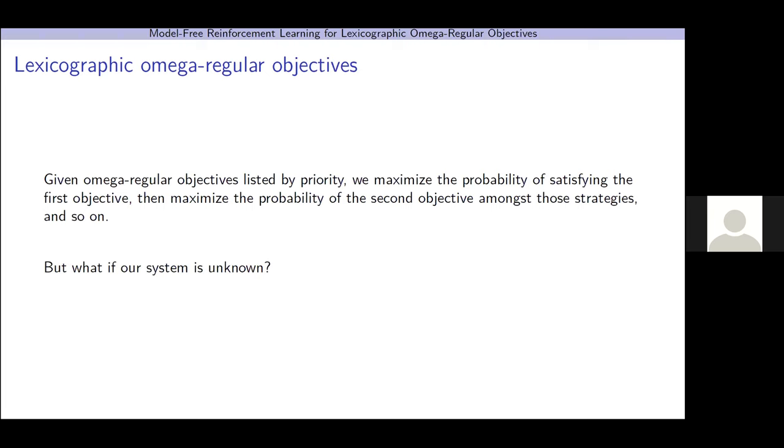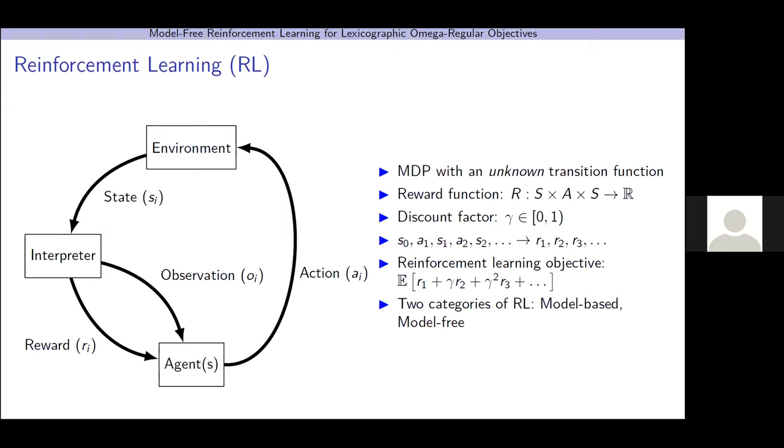So, to motivate reinforcement learning, what if our system is unknown? In reinforcement learning, we have an MDP with an unknown transition function. We also are given a reward function, which takes the transition tuple and maps it to a real number we call a reward. And we also have a discount factor. So, an infinite run of the system is converted by the reward function into an infinite sequence of rewards. The traditional reinforcement learning objective is to maximize the expected discounted sum of these rewards.